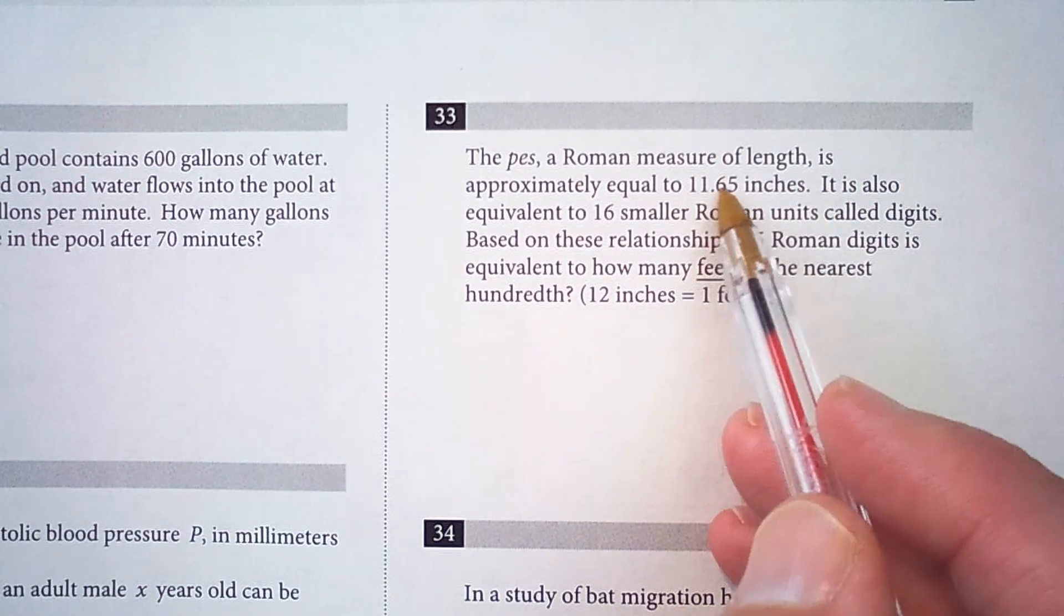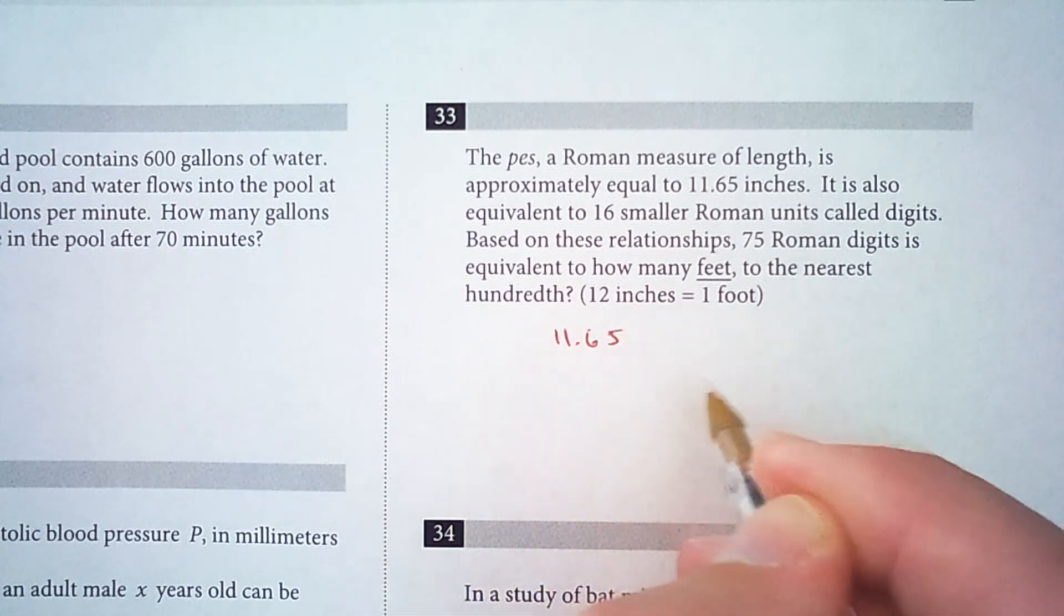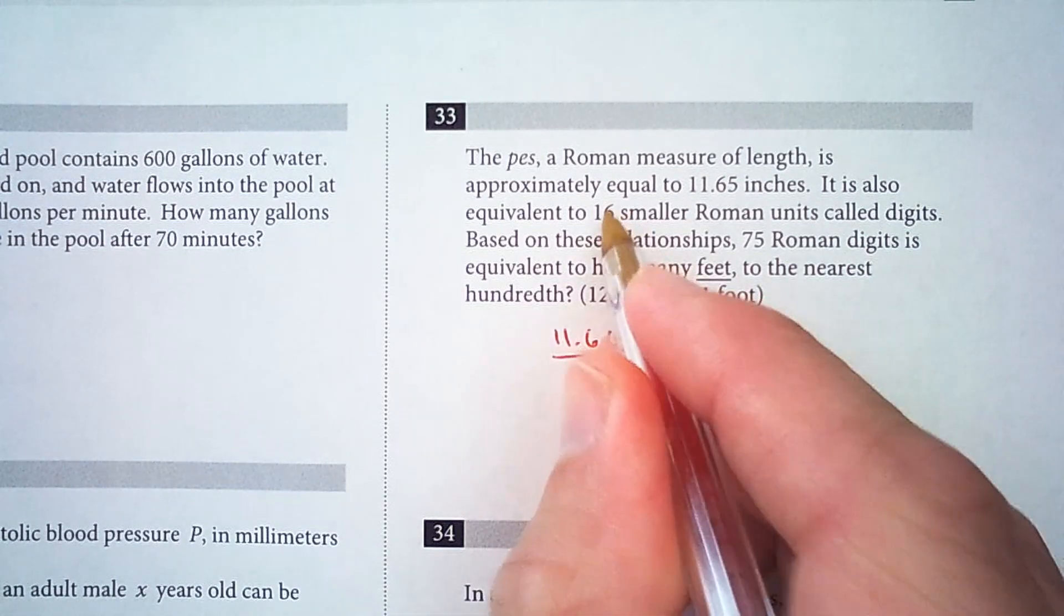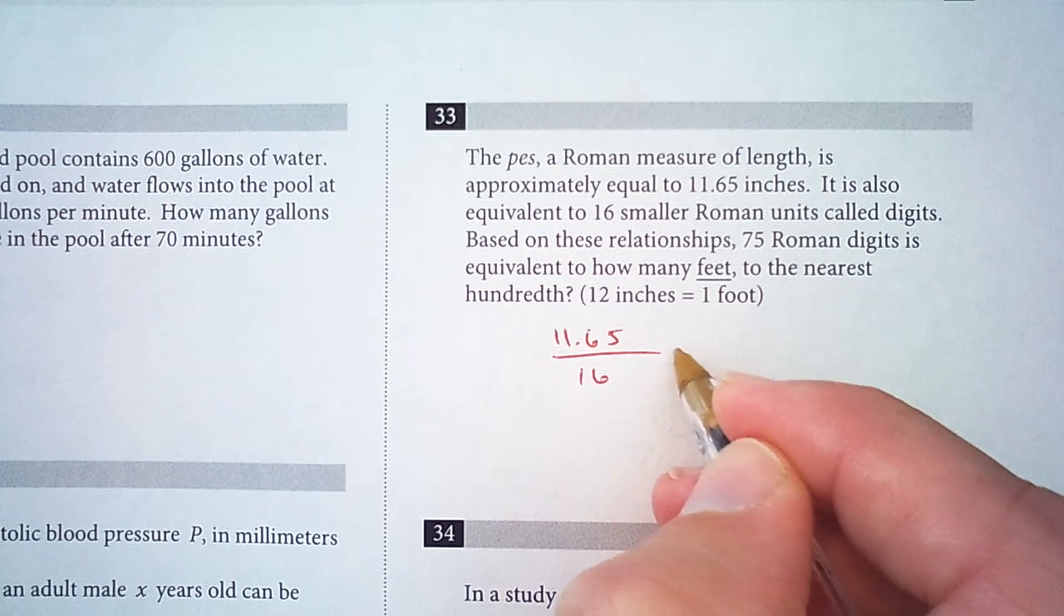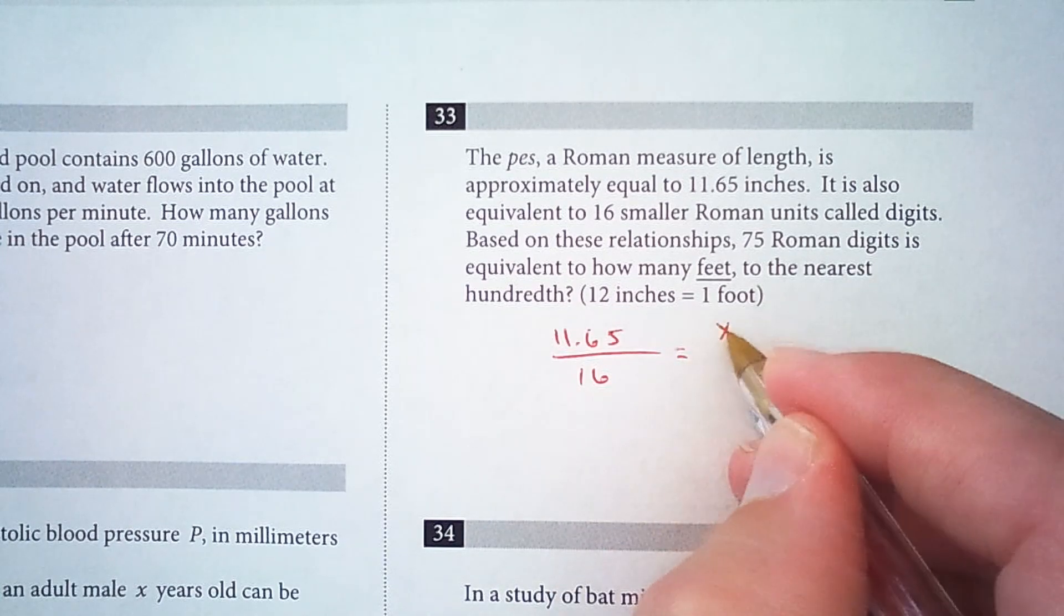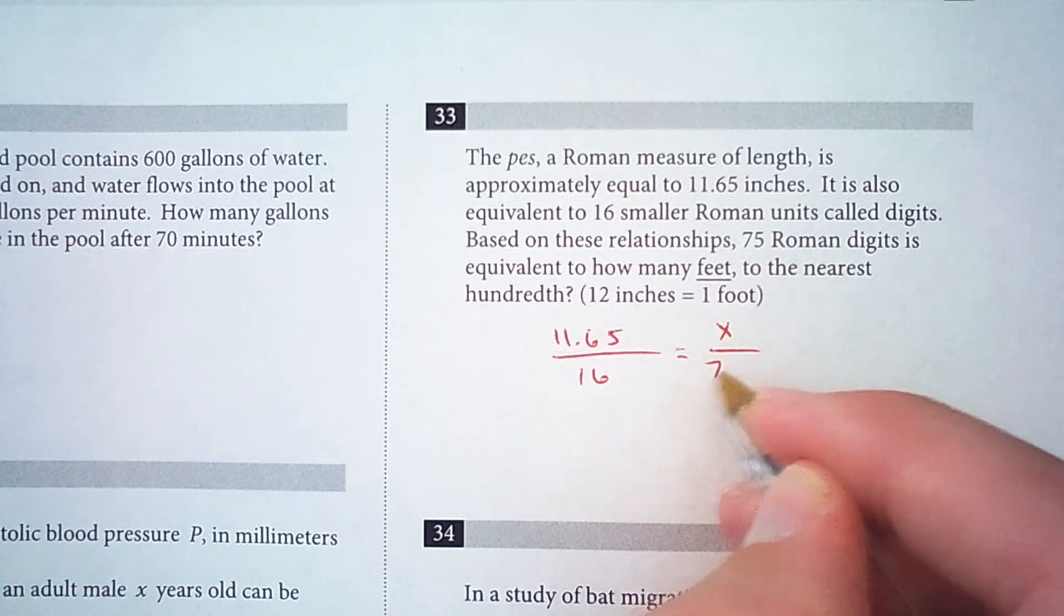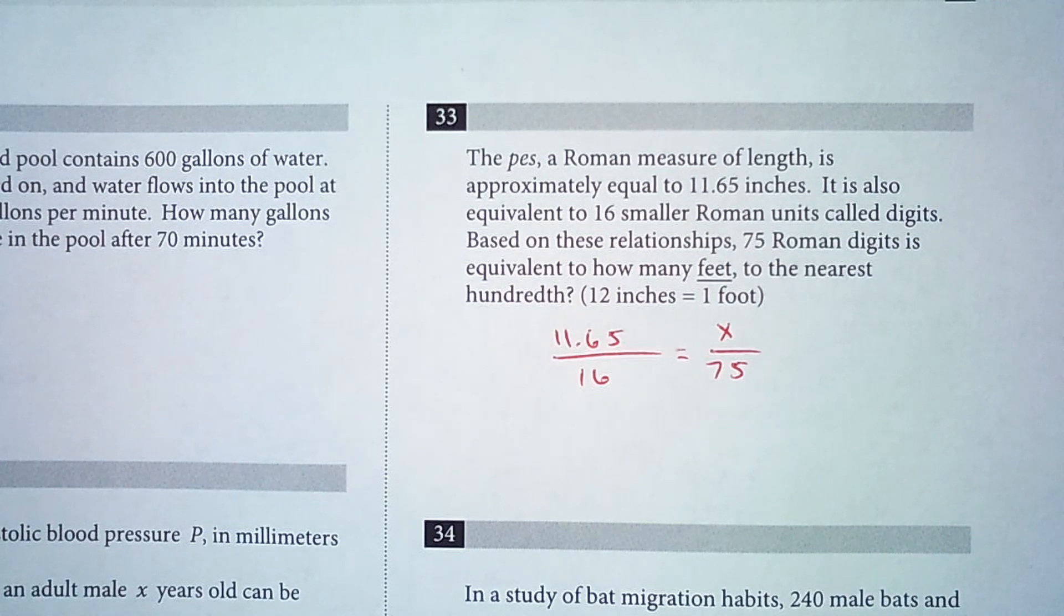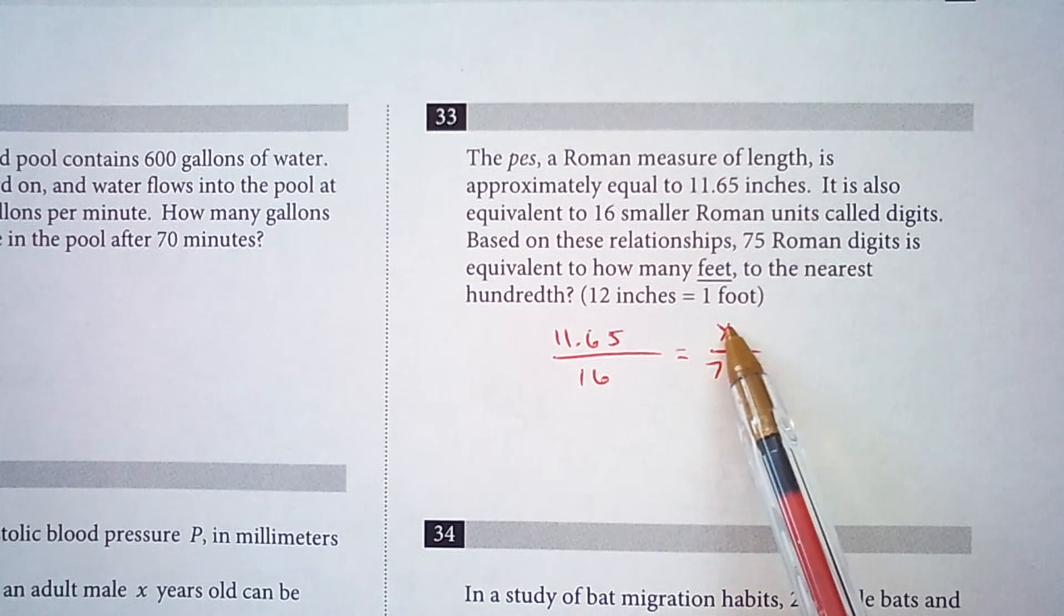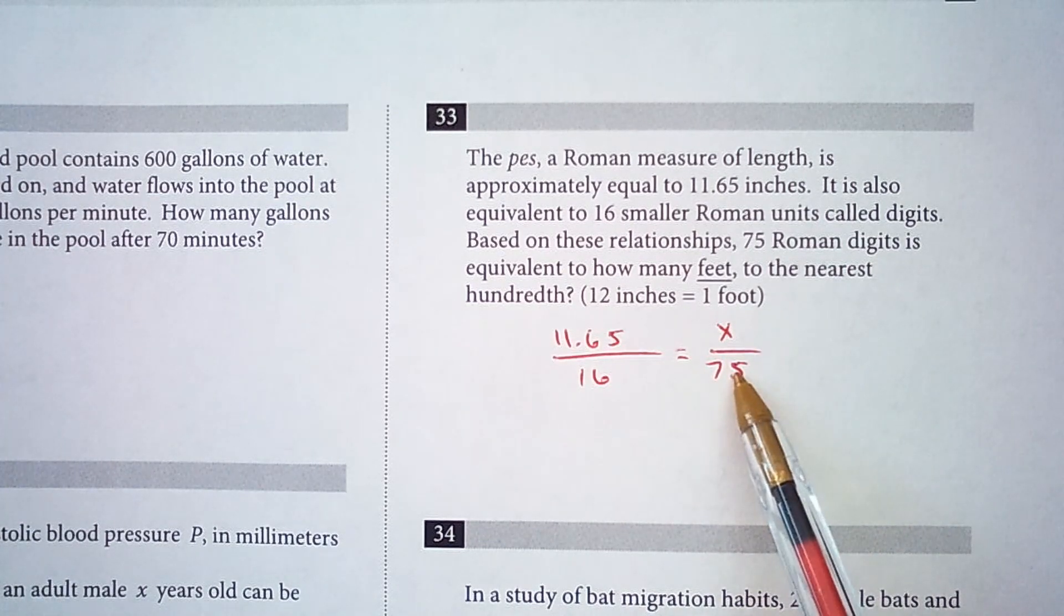So for every 11.65 inches, we have 16 digits. So how many inches would make 75 Roman digits? Okay, so we have a proportion here. 11.65 inches is to 16 digits, as how many inches is to 75 digits.